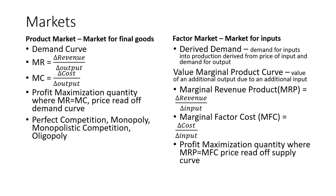Profit maximization occurs where the marginal revenue product equals marginal factor cost. The other switch here is when we start drawing the graphs, we're going to look not at the demand curve, but the supply curve.